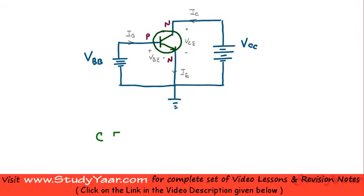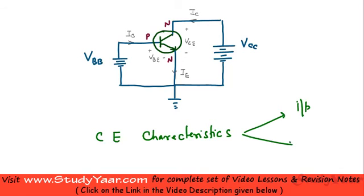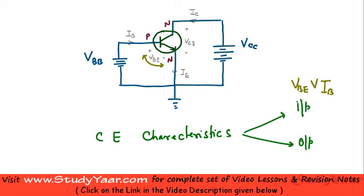Let's learn about common emitter characteristics. Basically you have two types of characteristics: one is your input characteristic and the other is your output characteristic. In the input characteristic you basically measure your change in your base current due to change in your base-emitter voltage. By varying this voltage, how does your base current change? So essentially it is a graph of VBE versus IB, which is your base current.